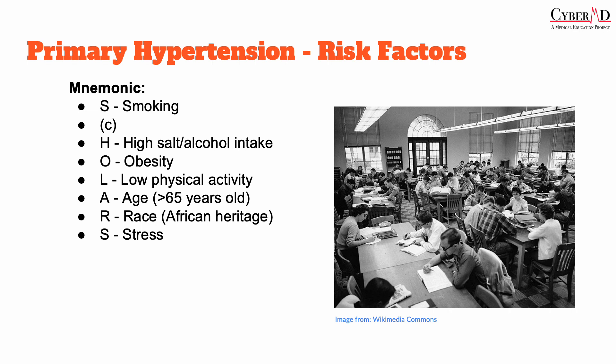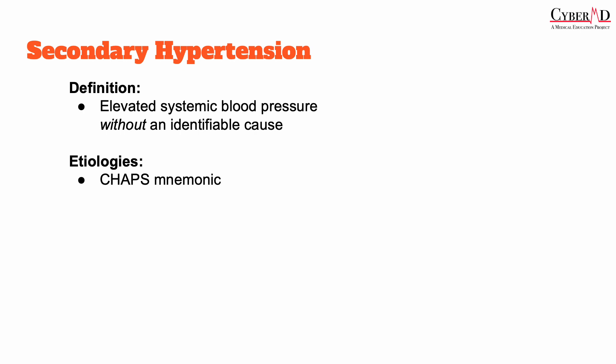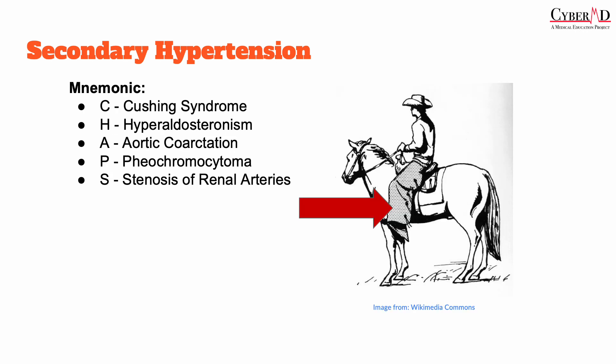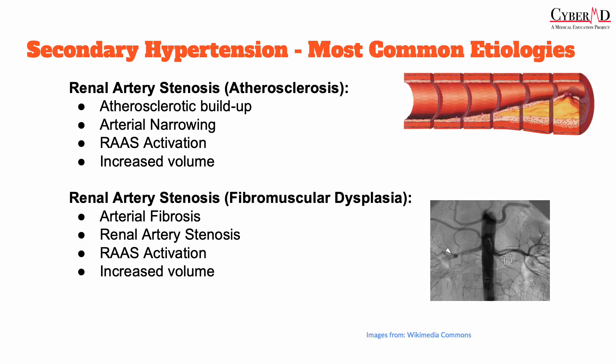Secondary hypertension is due to an identifiable etiology, and it accounts for about 5 to 10% of cases. Some of the causes can be remembered with the CHAPS mnemonic: Cushing syndrome, hyperaldosteronism, coarctation of the aorta, pheochromocytoma, and stenosis of the renal arteries. The big one is renal artery stenosis, and there are two underlying causes that are really important for Step 1. Renal artery stenosis occurs when there is a narrowing of one or both renal arteries, which supply blood to the kidneys. The narrowing may be caused by atherosclerosis — a buildup of plaque in the artery walls — or fibromuscular dysplasia, which is a non-inflammatory, non-atherosclerotic disease that affects the arterial walls.